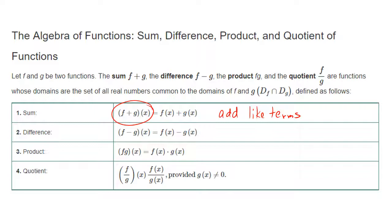If you want to subtract two functions, then you need to make sure and apply the subtraction or the negative sign to the second function, and then you will also combine like terms after applying that negative sign.